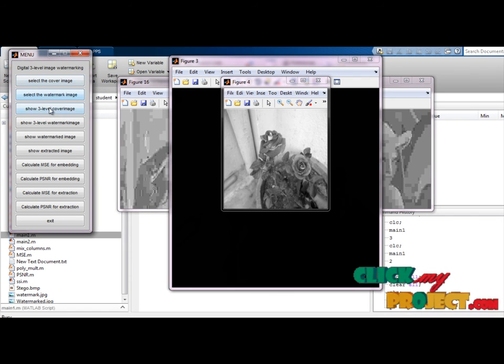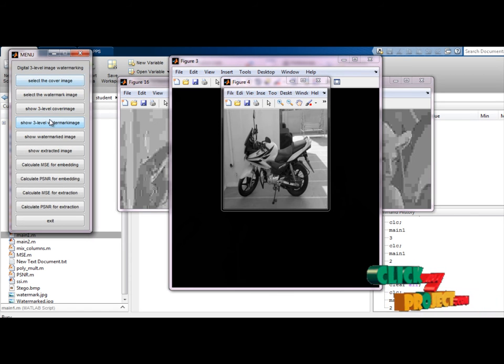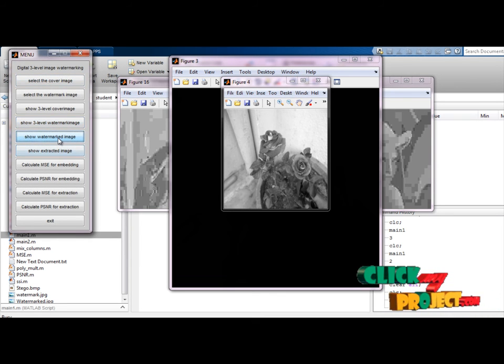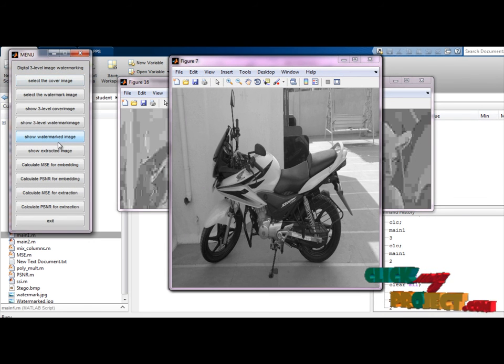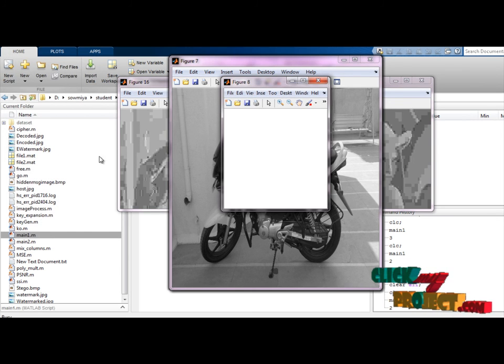Next, 3 level and show the watermark image. 3 level. The watermarked image, a bike. Inside, the watermarked image will be stored and extracted. The extracted watermark will be verified and hidden.